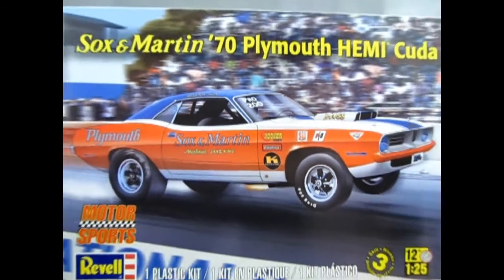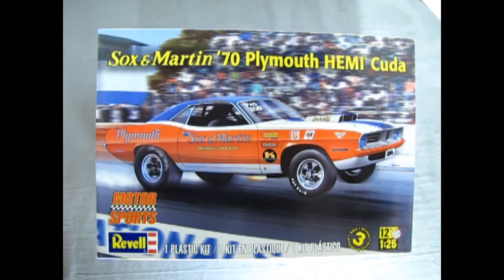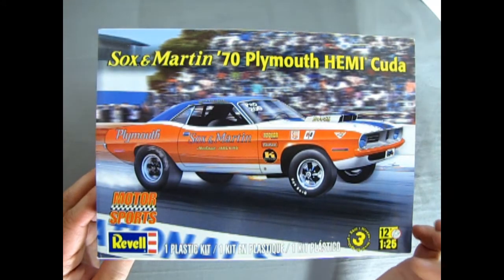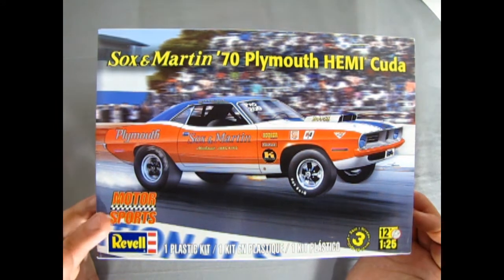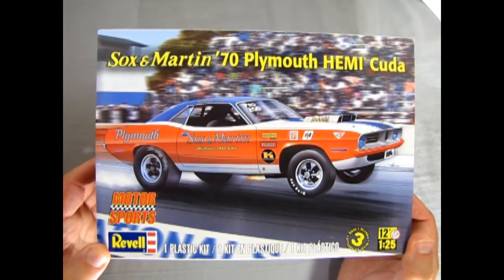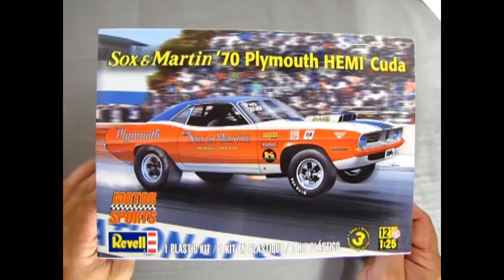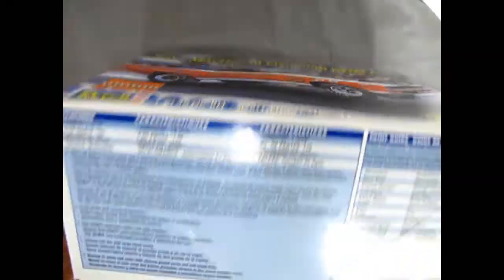Here we are once again down at the drag strip where we get to see the Sock and Martin 70 Plymouth Hemi-Cuda taking the lead. This is a skill level 3 kit for ages 12 and up and 1/25th scale from the Motorsports Association in conjunction with Revell. So this is another kit loaned to me by my good friend James. Let's just turn up the side of the box here and see what kind of coolness is in this kit.